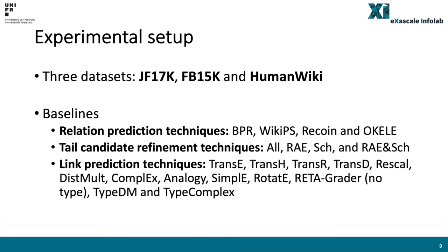The third category is called Link Prediction Techniques, which computes the score based on the set of candidate relation-tail pairs for a given head, generated by the previous two categories. Additionally, we also consider a variation of RetaGrader as an additional baseline, where we learn from triplets only, without learning from the entity type triplets. We refer to this baseline as RetaGrader no-types.